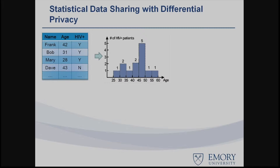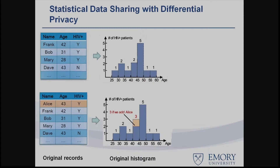To provide a rigorous guarantee that no individual record is disclosed, consider: if we simply release the histogram and an adversary has background knowledge — one database without Alice and one with Alice — by taking the difference between the two histograms, the adversary might deduce that Alice has an HIV-positive attribute.